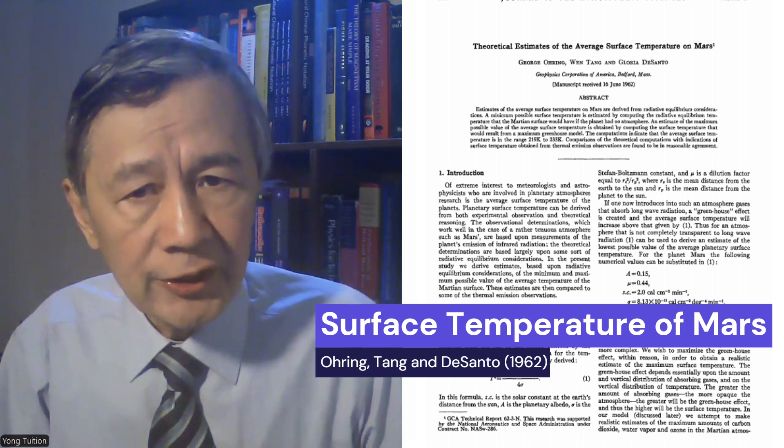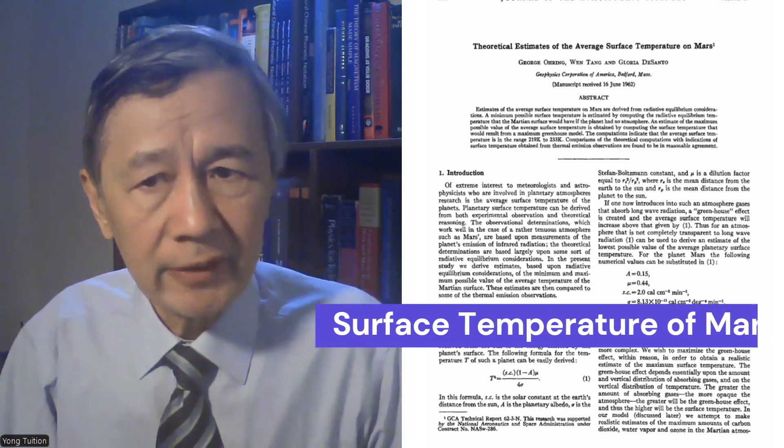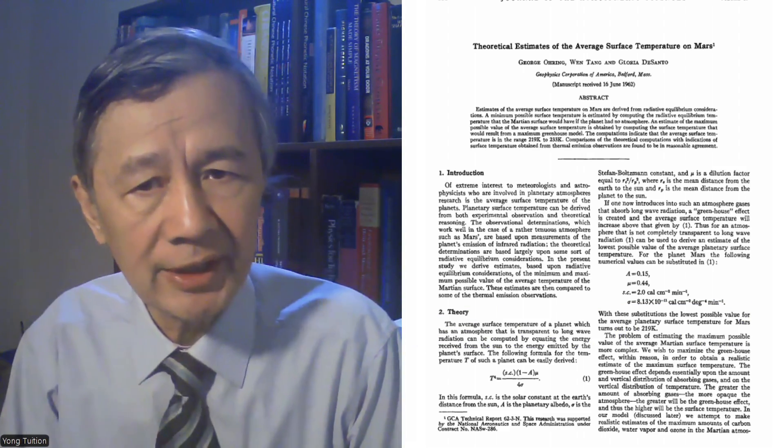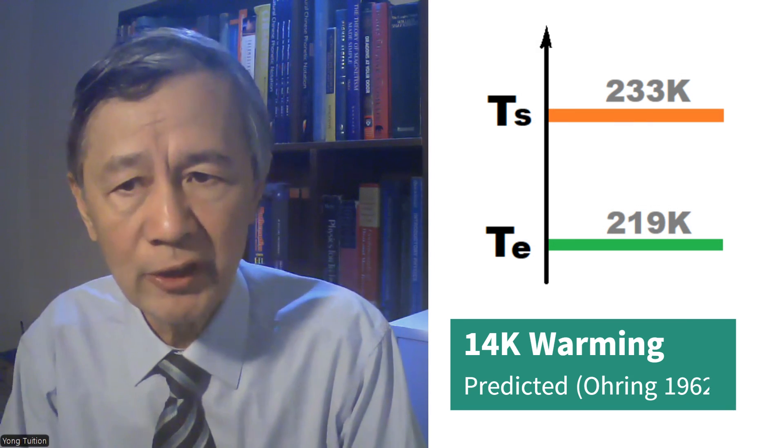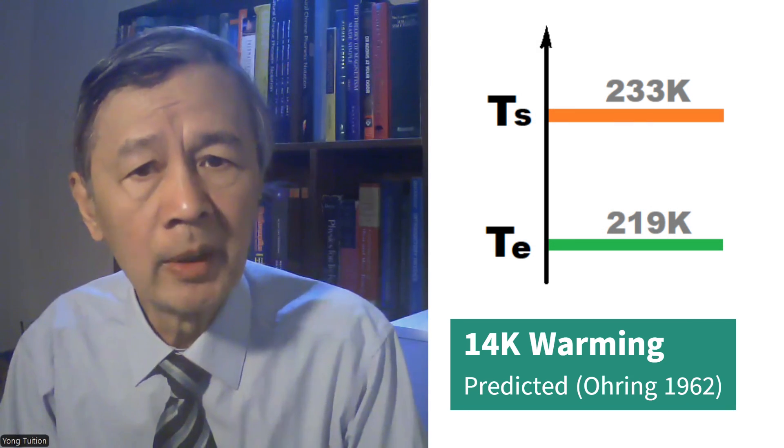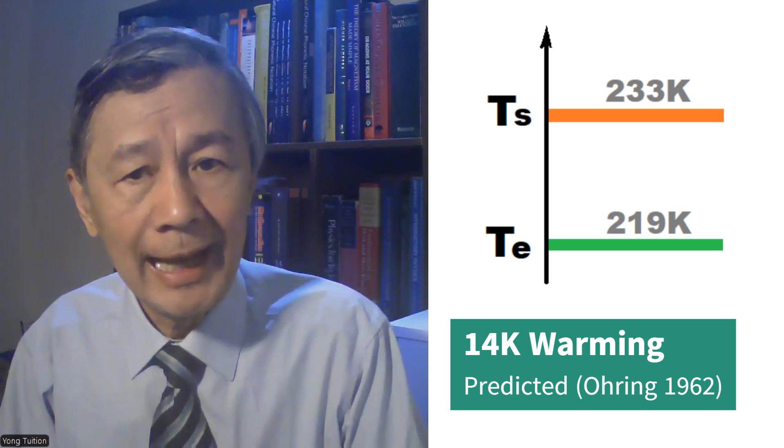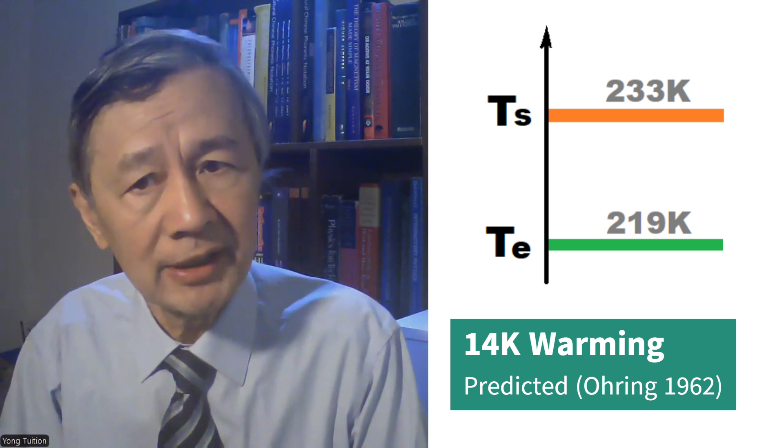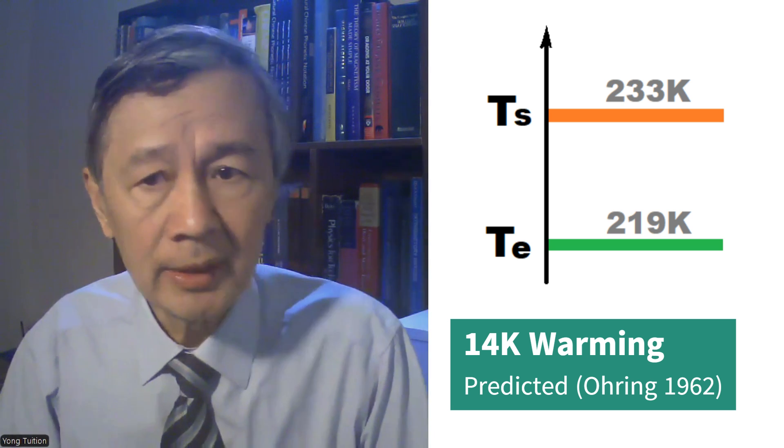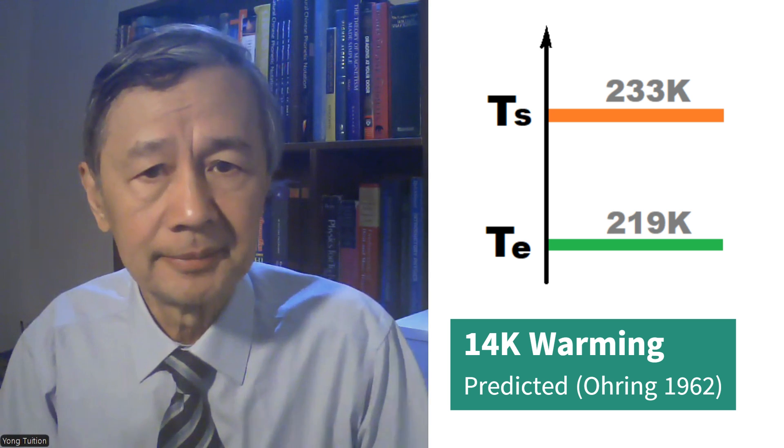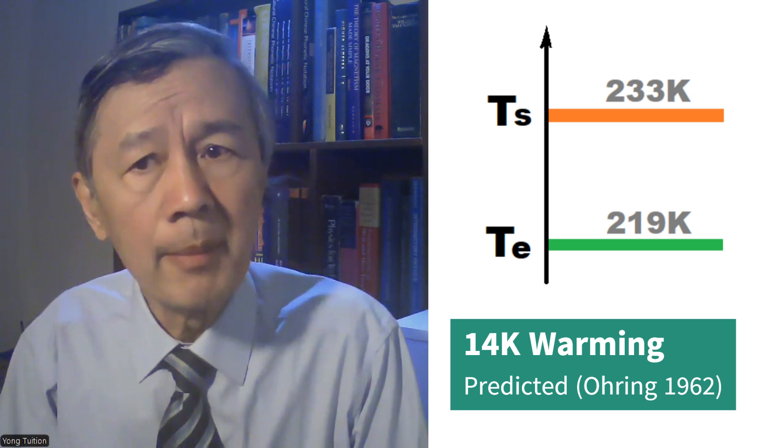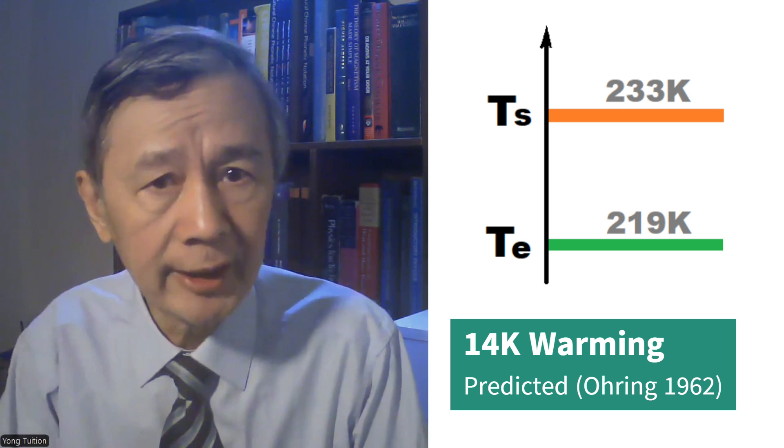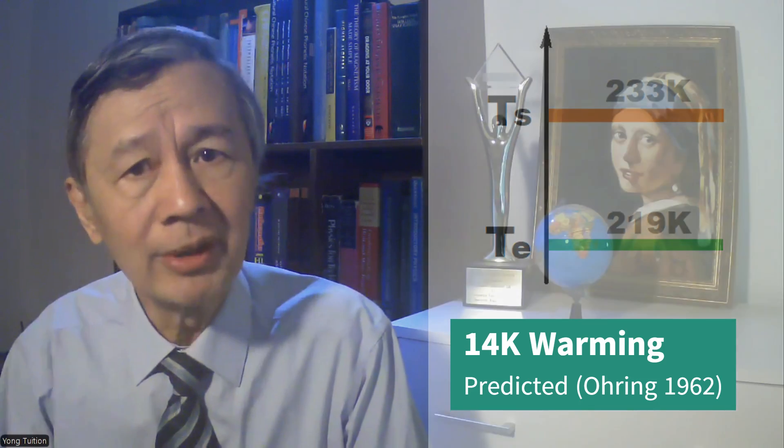By inversely solving the radioactive transfer equation, they derived both the highest average surface temperature of Mars to be 233 Kelvin with the greenhouse gases, and the lowest GMST 219 in the absence of greenhouse effect. This indicates that the greenhouse warming on Mars is about 14 Kelvin, well below 80 Kelvin warming as anticipated.